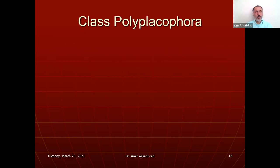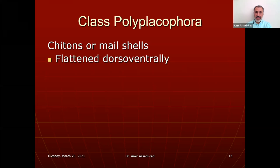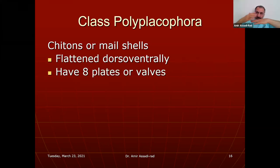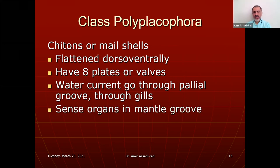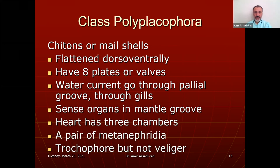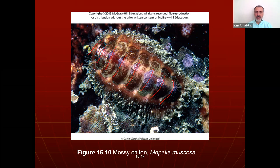Class Polyplacophora — we have specimens in the lab. Common name is mail shell or chiton. They are flattened and have eight valves or plates on the back of the shell. If you look at the shell, you will see eight valves.